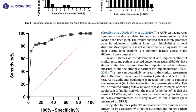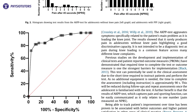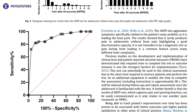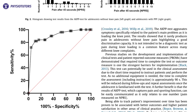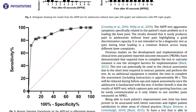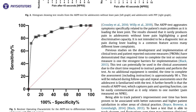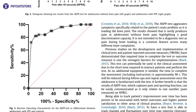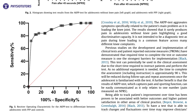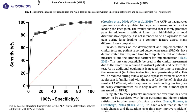The ROC analysis showed that at a threshold of 1.25 on the NRS scale, the sensitivity and specificity were most optimal, being 82% and 89% respectively. At this point, the positive likelihood ratio was 7.6.